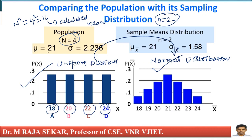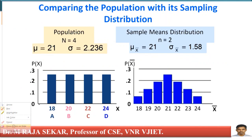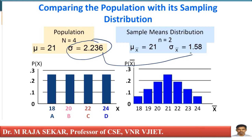What's happening here? If I take samples and calculate means and plot them, it is no longer uniform distribution. Your uniform distribution is converted into normal distribution. This observation is very, very important. If you calculate statistics, mean mu for population is 21, and the sample mean is also 21. There is no difference in terms of mean, but there is a difference in terms of variance. Population variance is 2.236, sample variance is 1.58. I am setting a stage for the Central Limit Theorem.